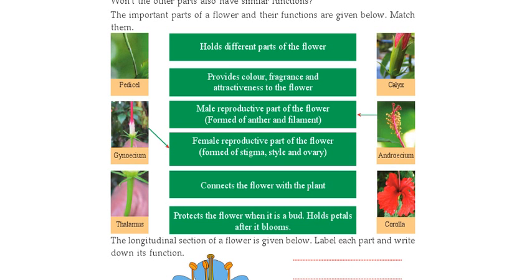Next to calyx is the corolla. This colored part — see here — this is the corolla. The corolla provides color, fragrance, and attractiveness to the flower, and thus it attracts insects for pollination.